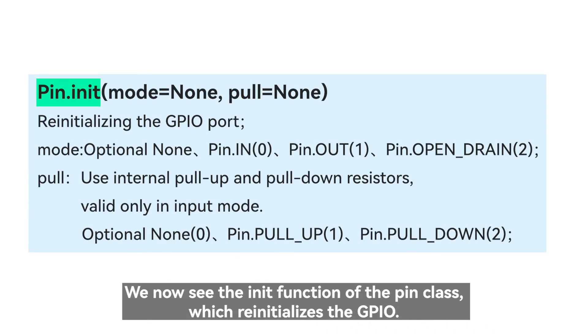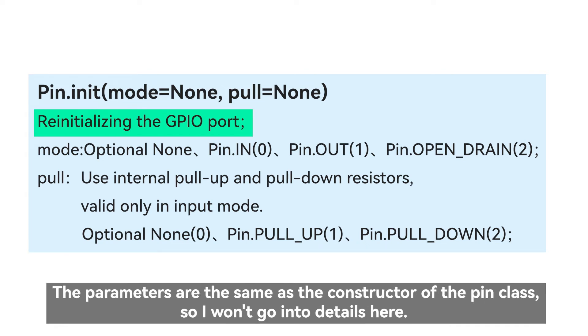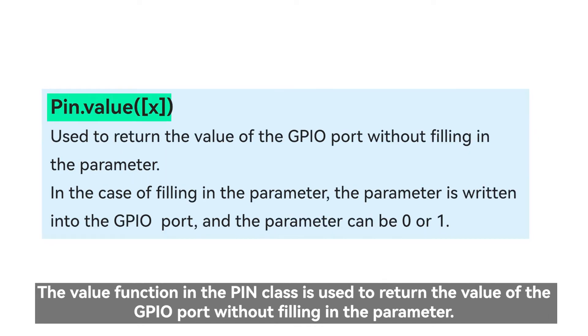We now see the init function of the pin class, which reinitializes the GPIO. The parameters are the same as the constructor of the pin class, so I won't go into details here. The value function in the pin class is used to return the value of the GPIO port without filling in the parameter.